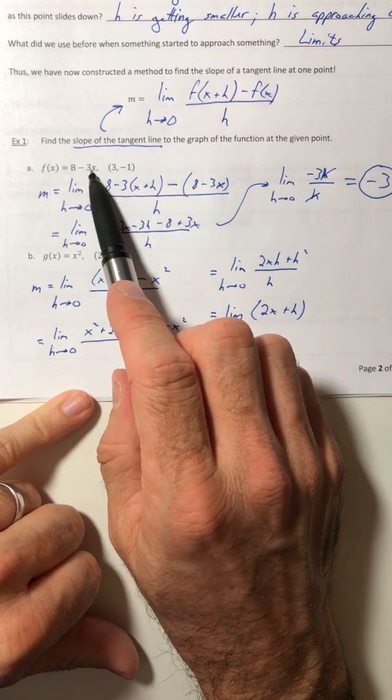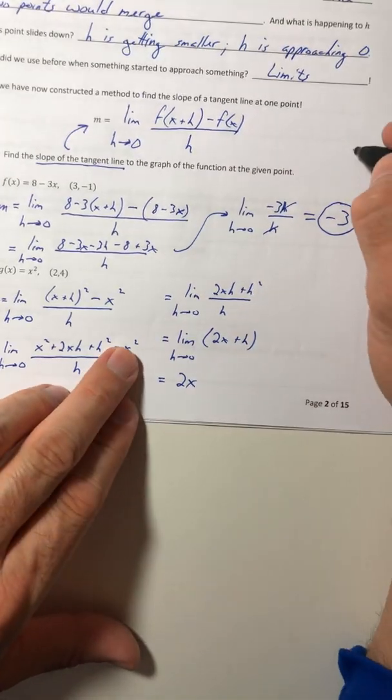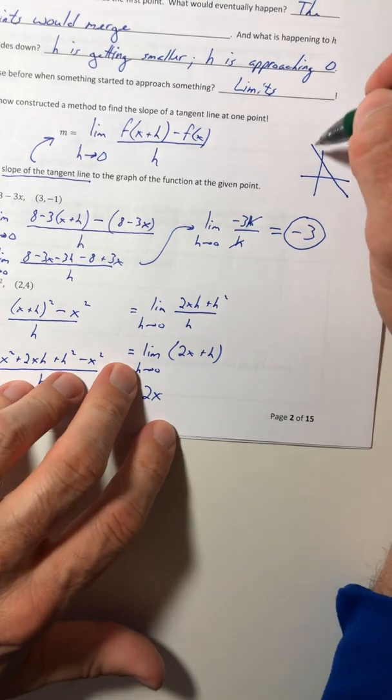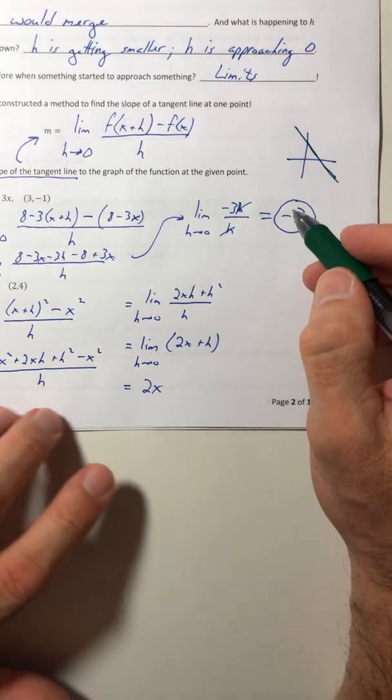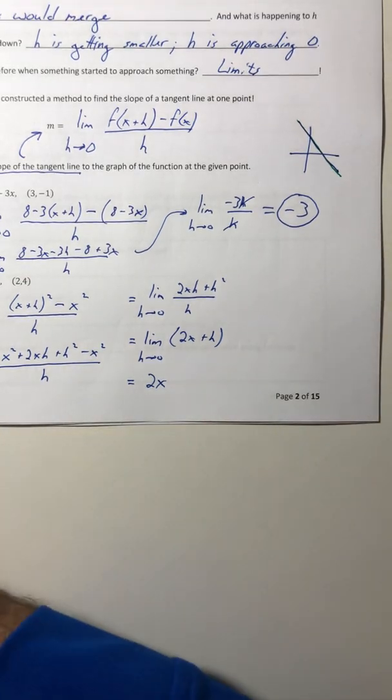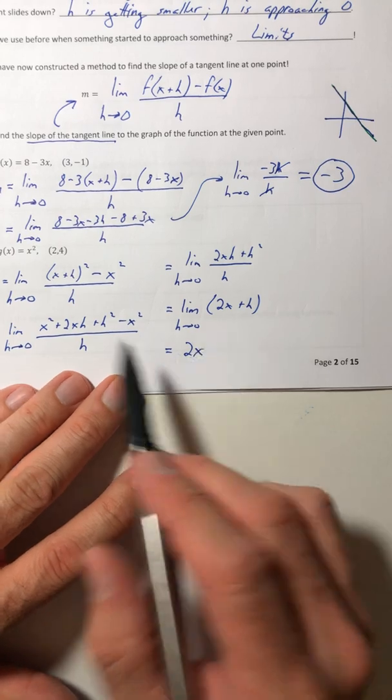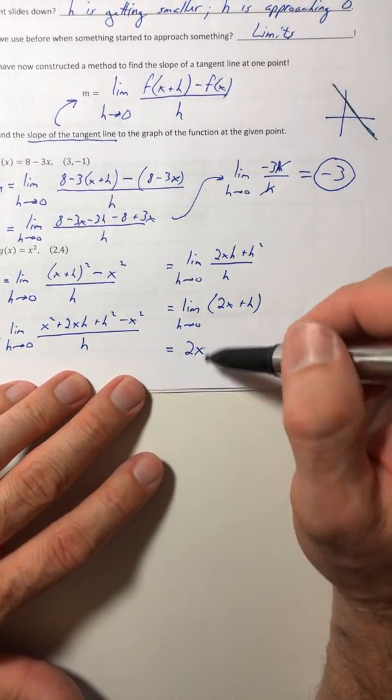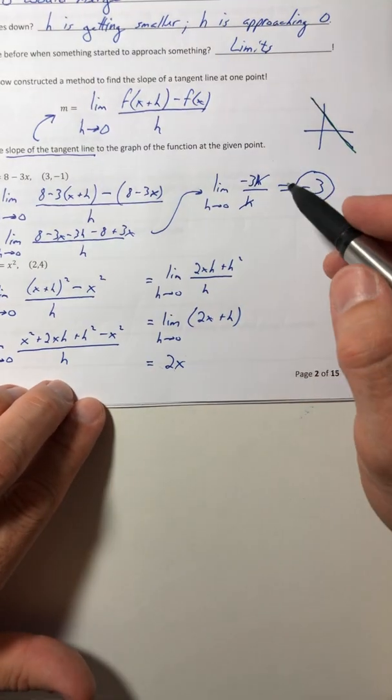because your original function f of x - that was a line itself. So 8 minus 3x was something like this. Well, if you draw a tangent line on a line, you just get the same line itself. So it's just going to be negative 3. If it's not linear though, you're going to end up with some sort of a function as the slope. So you have to keep going just a little bit, though it's not going to be a complicated process.